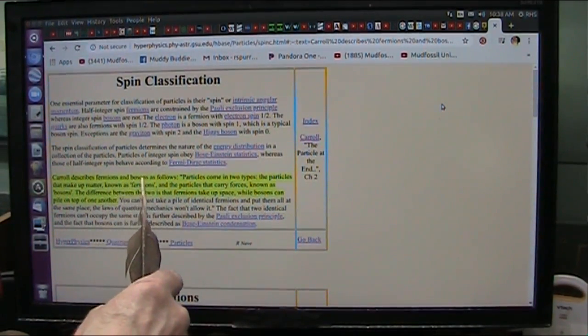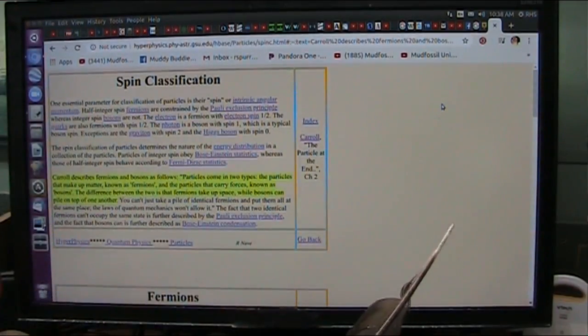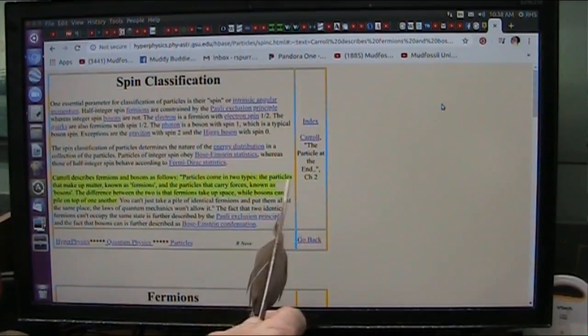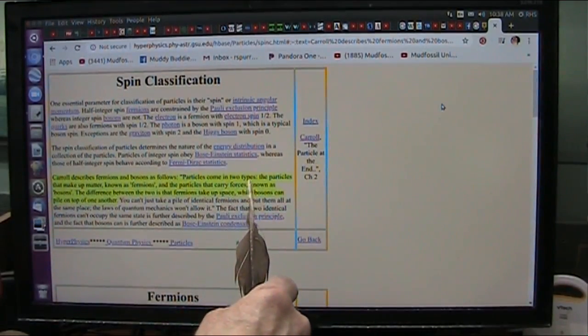Now, Carroll describes fermions and bosons, which is the tiniest particles that exist. The particles come in two types. This is wrong, but here's what he says. Particles come in two types.